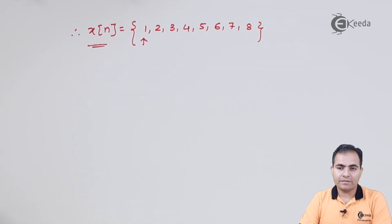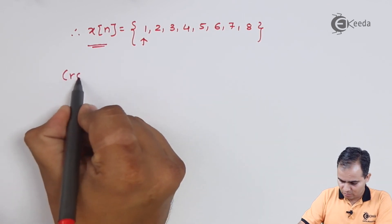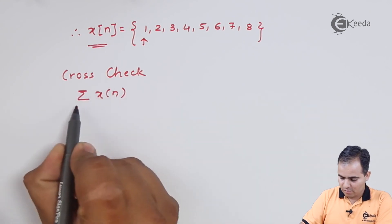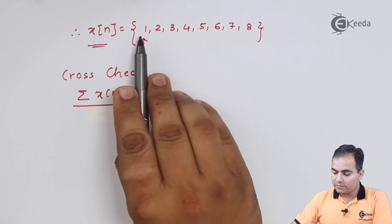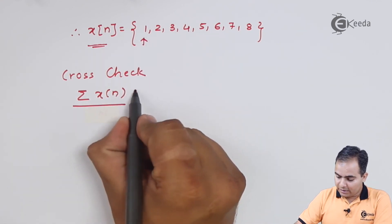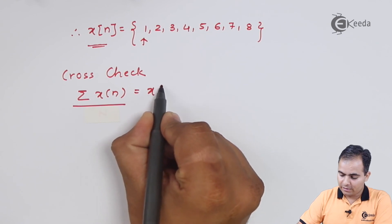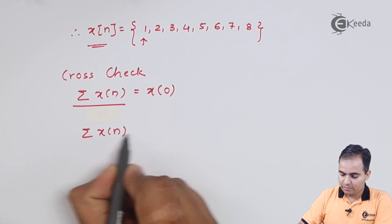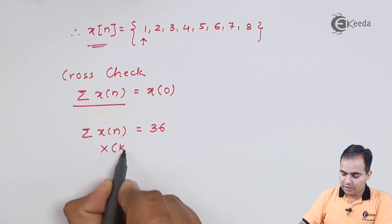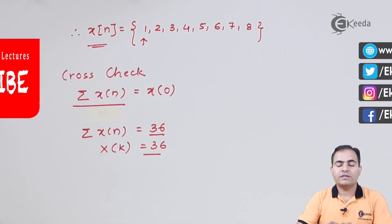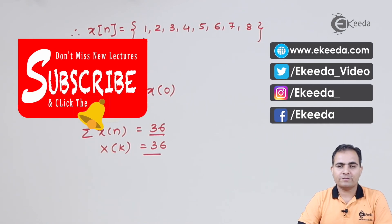We have calculated x[n] using the IFFT algorithm, but to verify the answer there is one cross-check method: add all the values of x[n]. Adding: 8 plus 2 is 10, 7 plus 3 is 10, 6 plus 4 is also 10, giving 30; and 30 plus 5 plus 1 is 36. This whole value must equal x[0] of the input X[k], which is 36. The summation of x[n] equals 36, and the input X[k=0] is also 36. If both values match, your result is absolutely correct. Thank you for watching, stay tuned to eKEDA and subscribe for more videos.